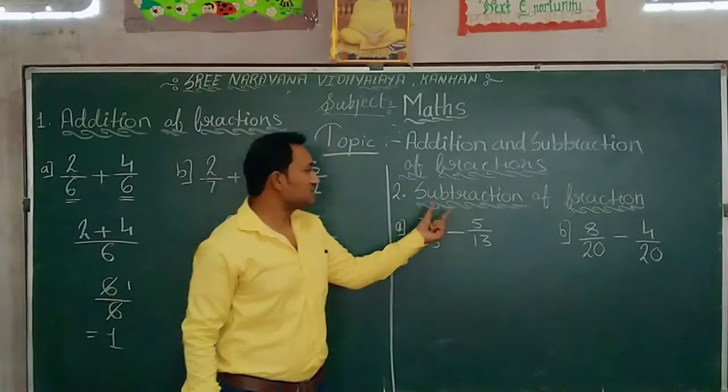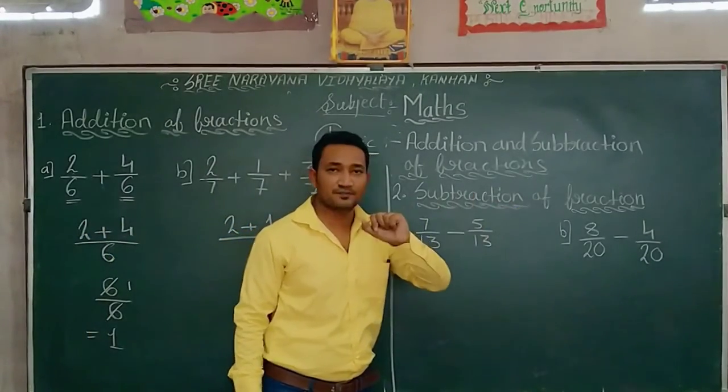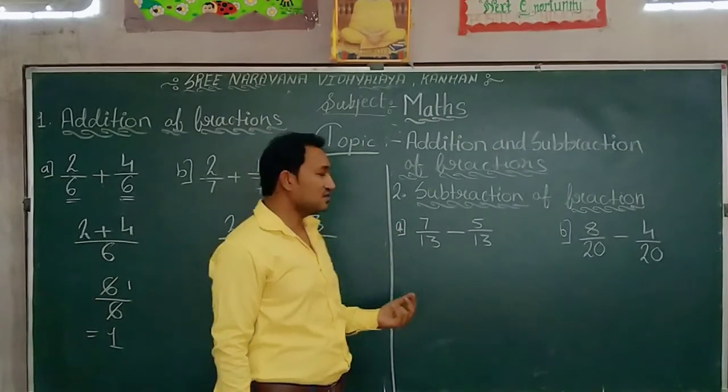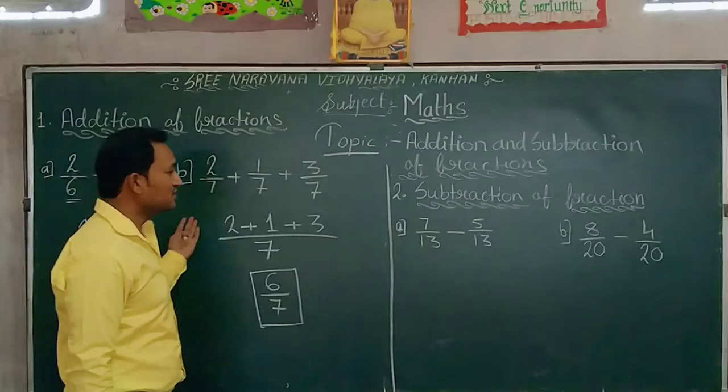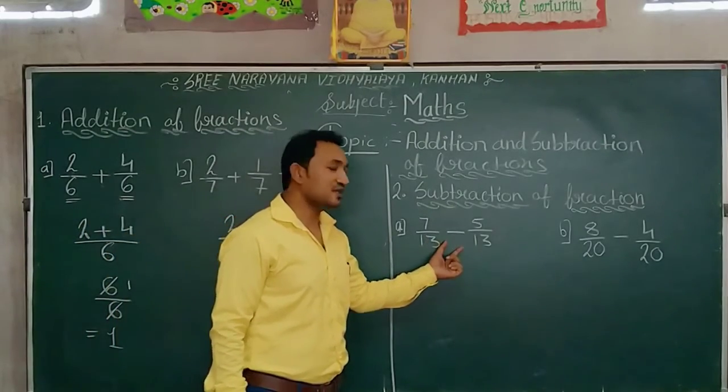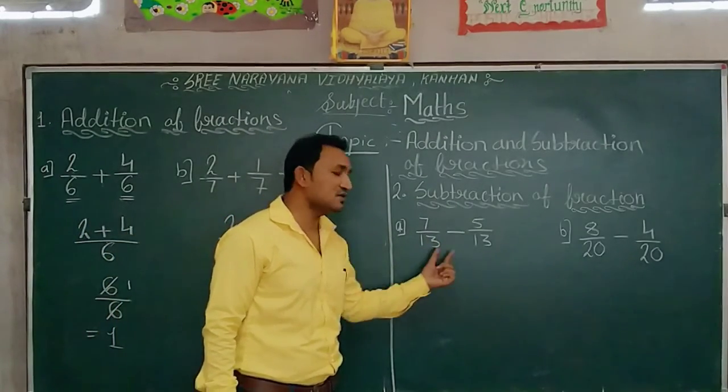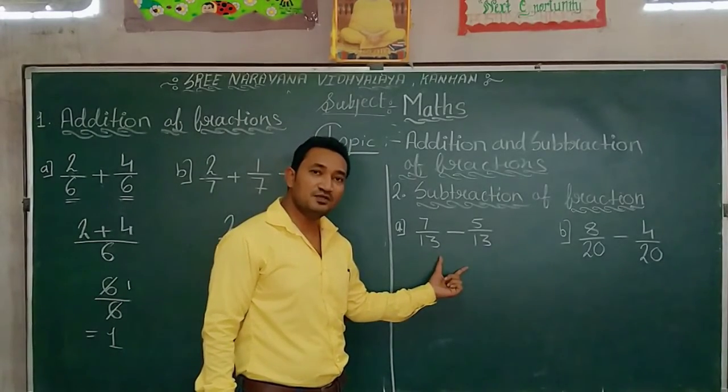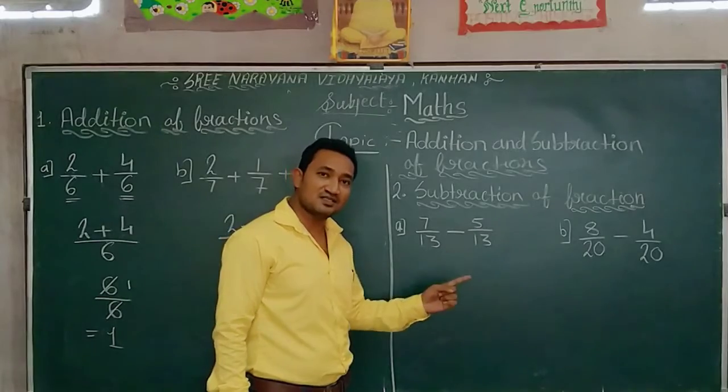Now look here. Subtraction of fractions. This is also very simple method. As we perform addition, similarly we will perform subtraction. Here again the denominators are equal. And in this condition when the denominator is equal what we will do? We will write denominator as it is.